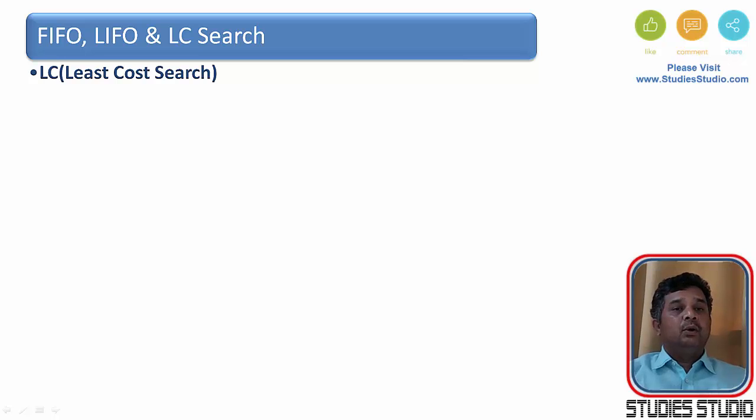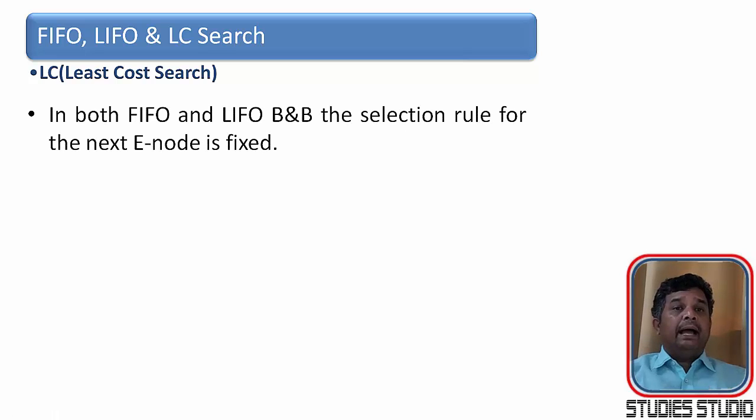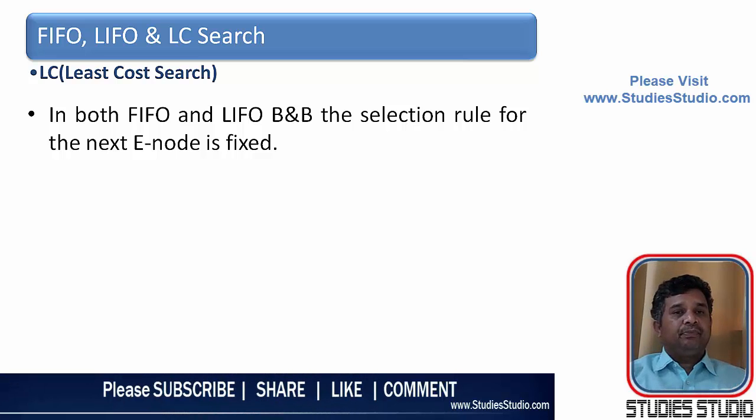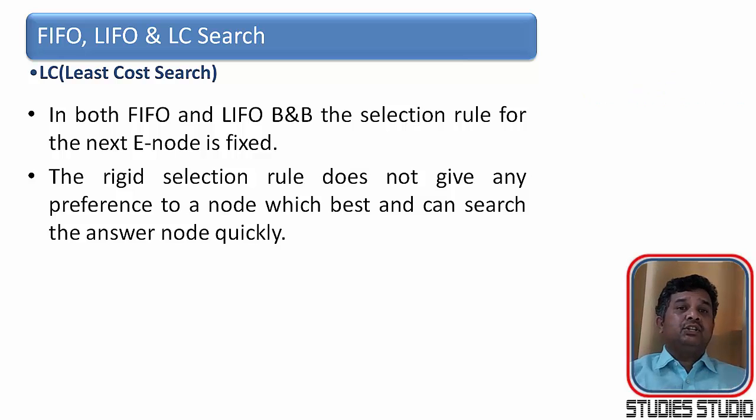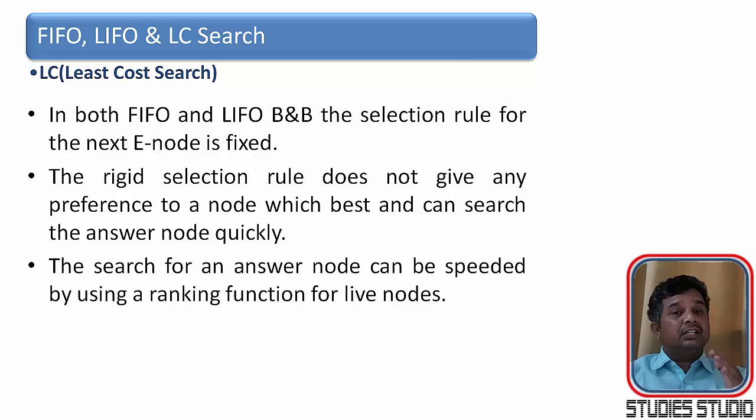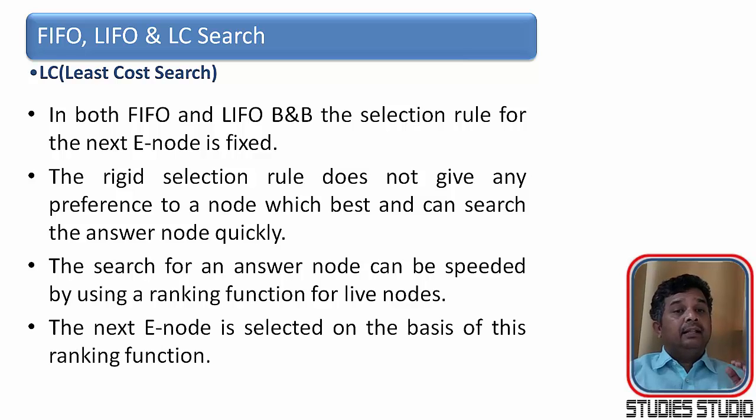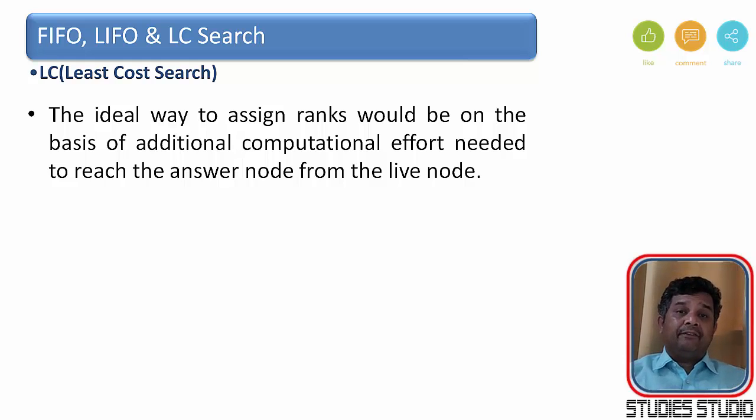Now let us try to understand one more searching technique, that is the least cost search. Basically, in FIFO and LIFO branch and bound technique, the selection rule for the next E-node is fixed. And because of the rigid selection rule, it doesn't have any preference to a node which is best and can be searched the answer node quickly. The search for the answer node can be speeded up by ranking function. And the next E-node is selected on the basis of the rank function.